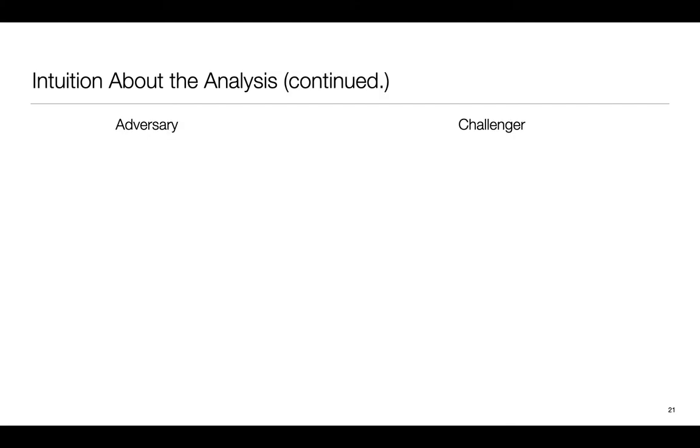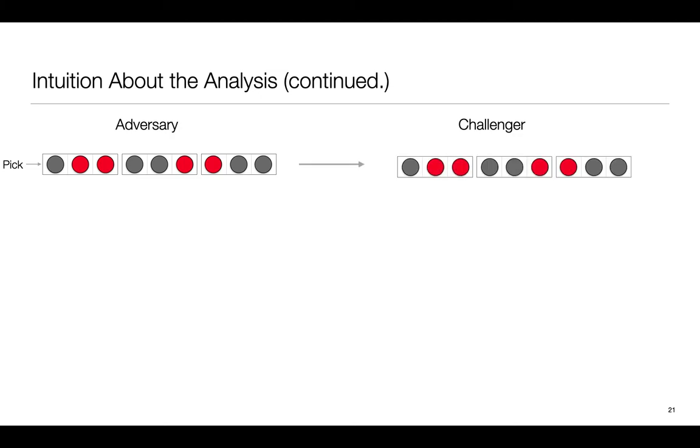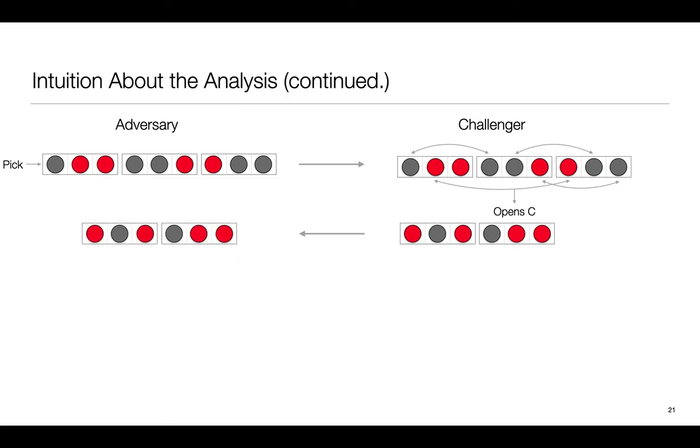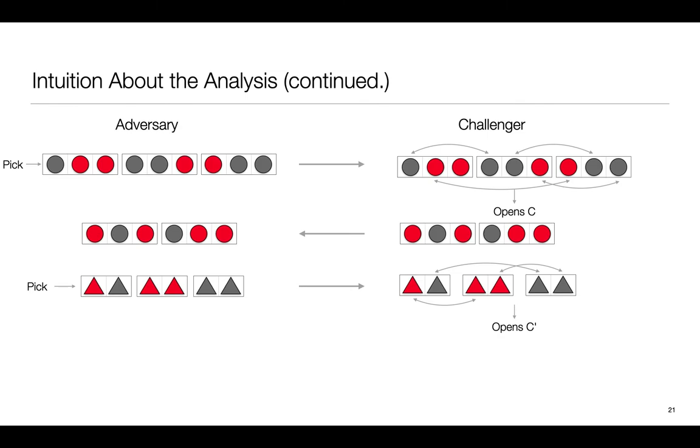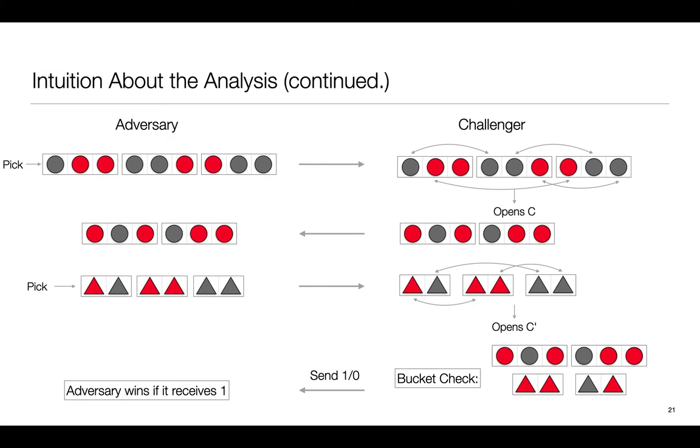We can imagine bucket check as a game between the adversary and a challenger. Assume that there are 3 buckets, each of size 3. The adversary first picks a bunch of balls, corrupts them however it wants and how many ever it wants and sends them over to the challenger. The challenger shuffles them and opens C balls. If they are inconsistent, it sends the permutation of balls to the adversary. The adversary then chooses the number of triangles to corrupt based on the permutation it received and sends them to the challenger. The challenger repeats the same process of opening and verification. The challenger runs bucket check on the remaining set of balls and triangles and it sends 1 or 0 depending on whether the checks are passed. The adversary wins if it receives a 1.